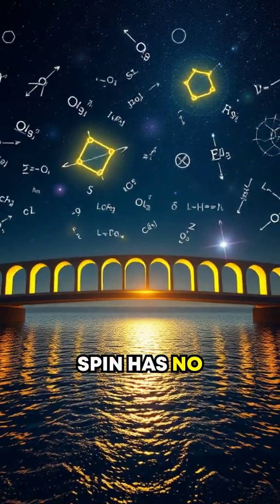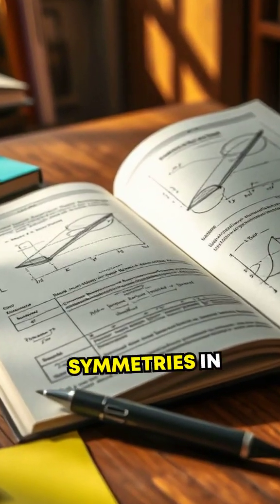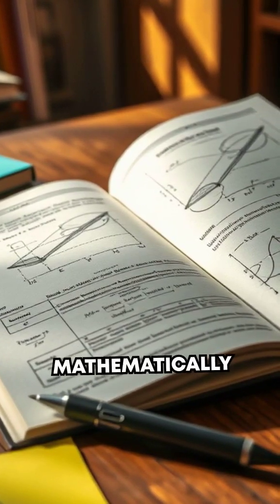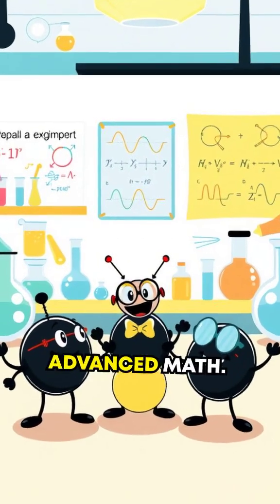Turns out spin has no classical equivalent. It's tied to fundamental symmetries in space and described mathematically by group theory. Yeah, group theory, like in advanced math.